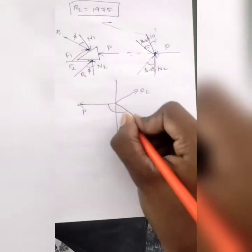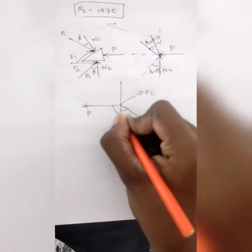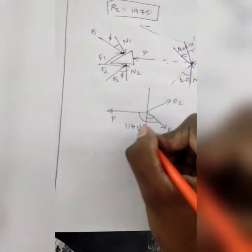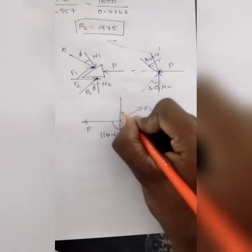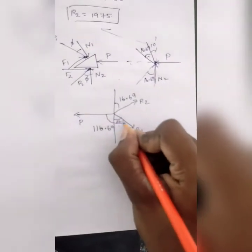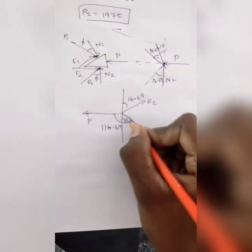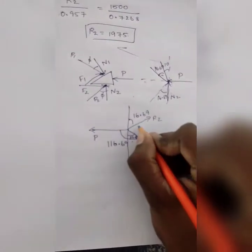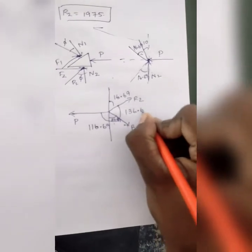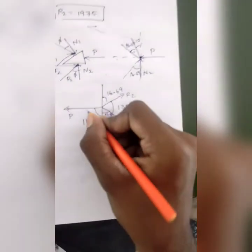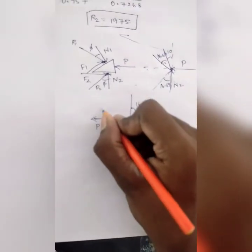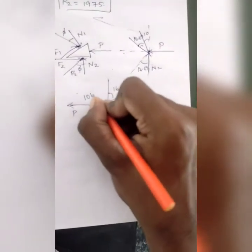This angle is 26.69 plus 90, which is 116.69. This angle is 16.69, this is 26.69, this angle is 16.62. Now, this angle is 136.62. Next is 90 plus 16.69, which is 106.69.